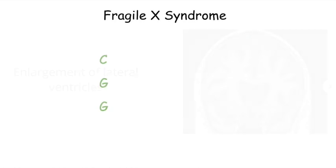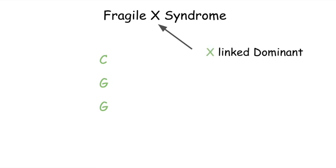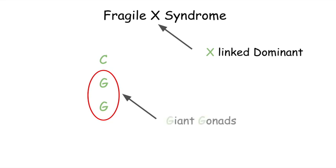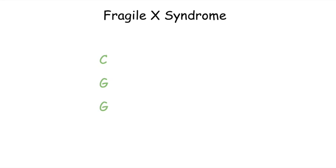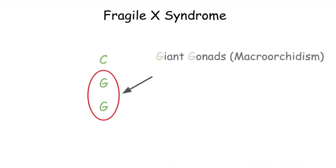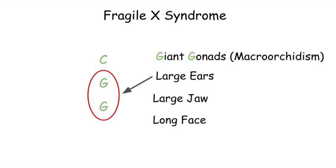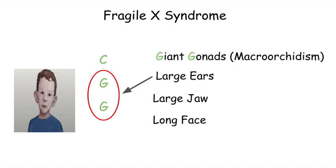Now let's look at fragile X syndrome. The X in fragile X syndrome tells you it is an X-linked dominant disorder. Remember the intersection that gave us CGG — we can use the GG to remember that these patients have a clinical finding of giant gonads. Patients with fragile X syndrome have large everything: giant gonads, large ears, a large jaw, and a long face.